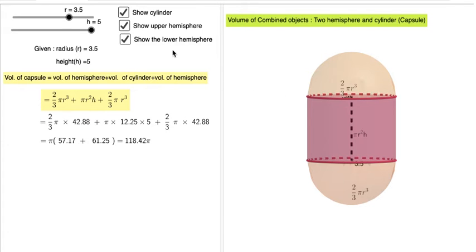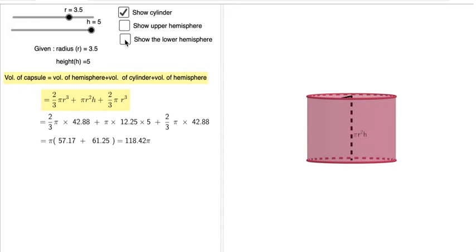Now you can uncheck and check. If you wanted to show only the cylinder, you can. So this is a cylinder.